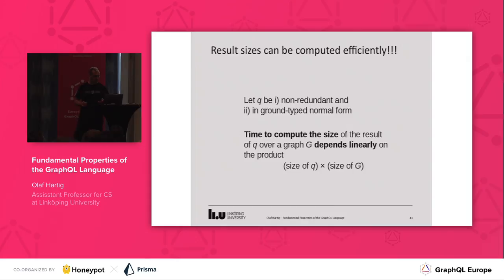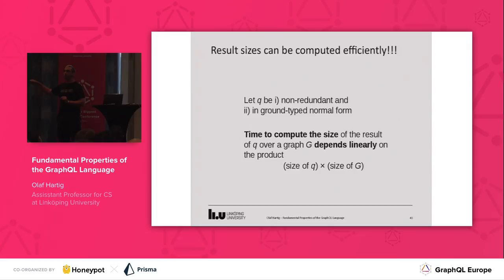So we have a new solution to this problem. What we show is that for queries which are non-redundant and in ground-typed normal form, the time required to compute the size of the result — without computing the result itself — depends linearly on the product of the size of the query times the size of the data. So we have a linear dependency on the input. The way we prove this, and this you will love, is by giving an actual algorithm which achieves this complexity bound.